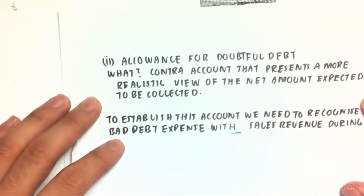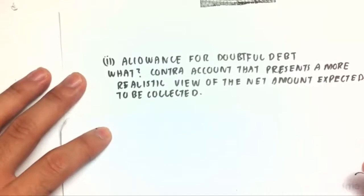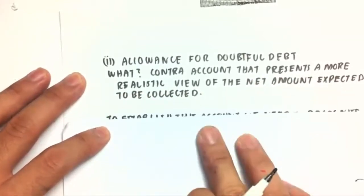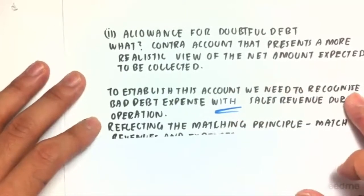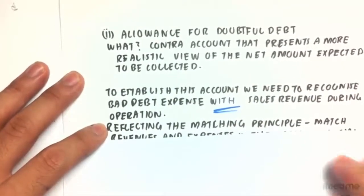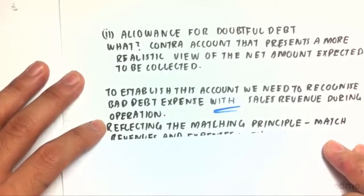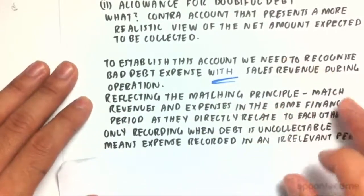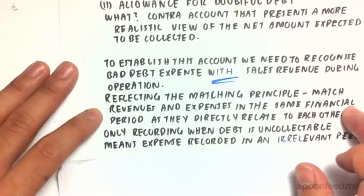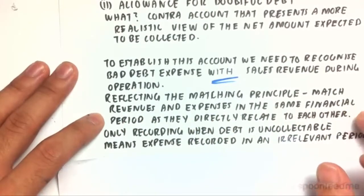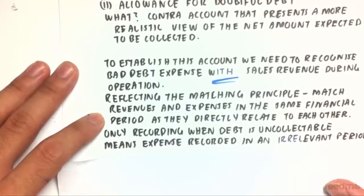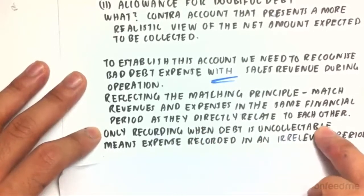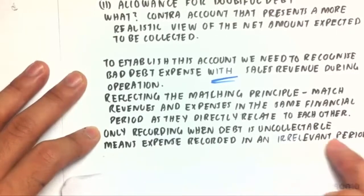So allowance for doubtful debt — what is it? It's a contra account that presents a more realistic view of the net amount expected to be collected. To establish this account, we need to recognize the bad debt expense with the sales revenue during operations, and that reflects the matching principle — matching revenues and expenses in the same financial period as they directly relate to each other.